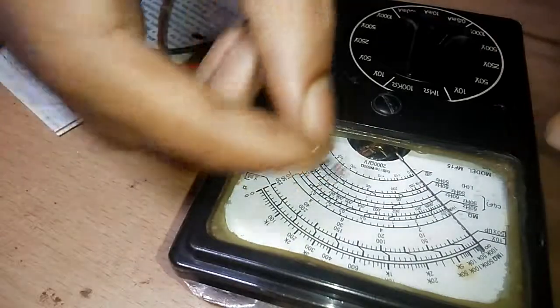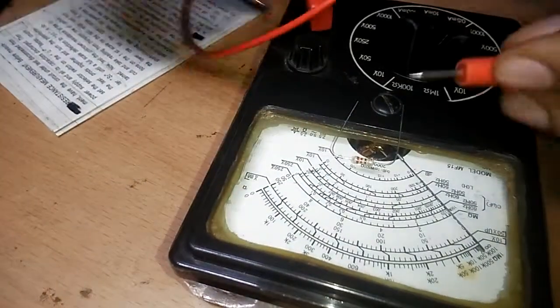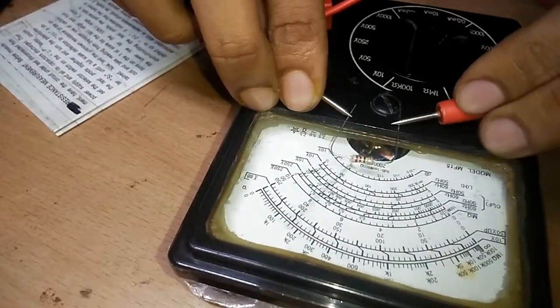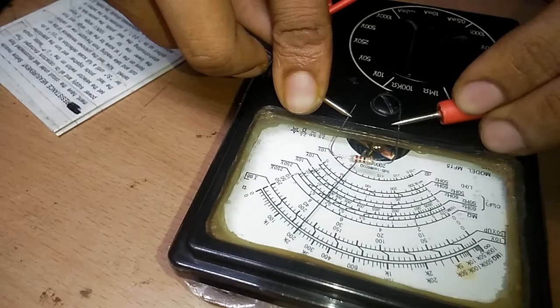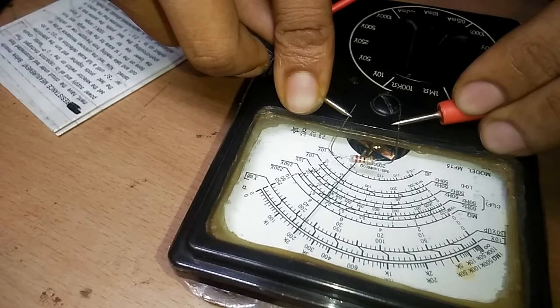Here I have a 220 ohm resistor. Let's measure it. It's showing 200 on the scale - it's supposed to be 220, I guess.